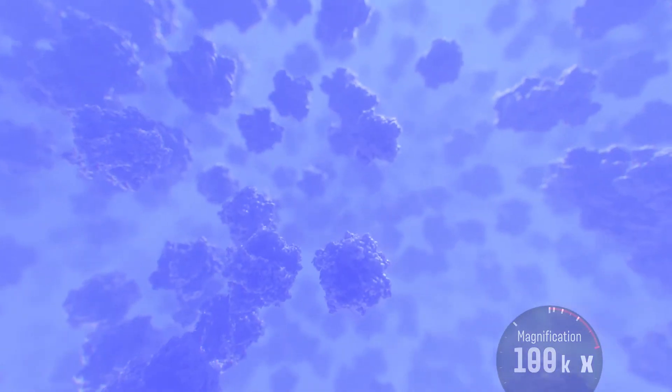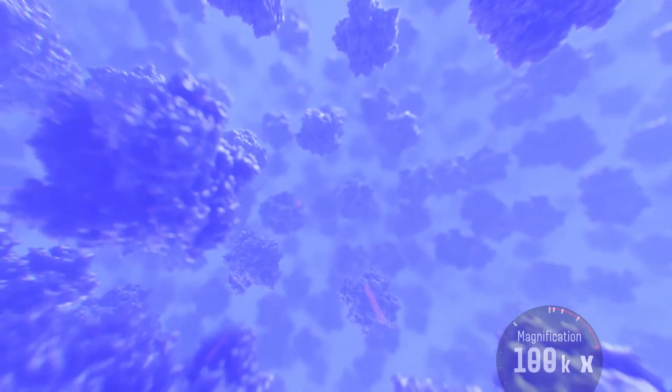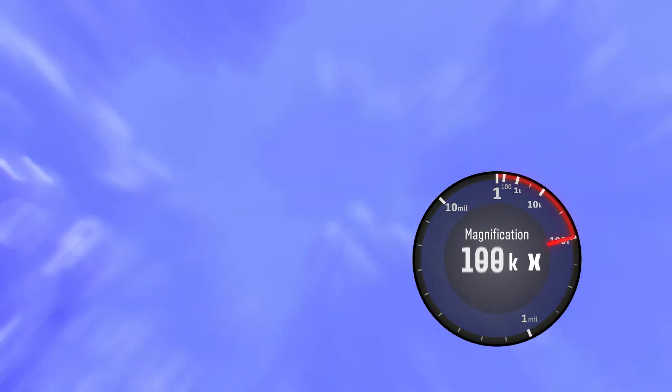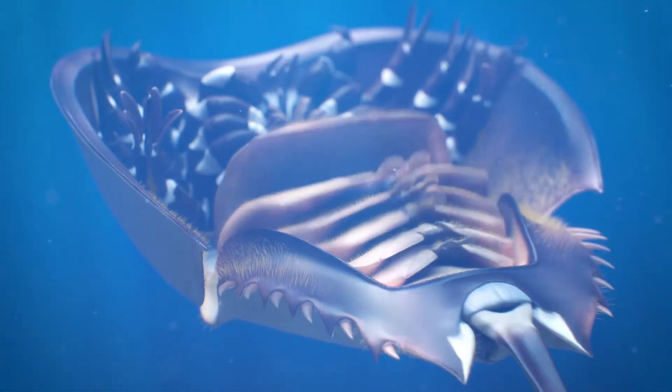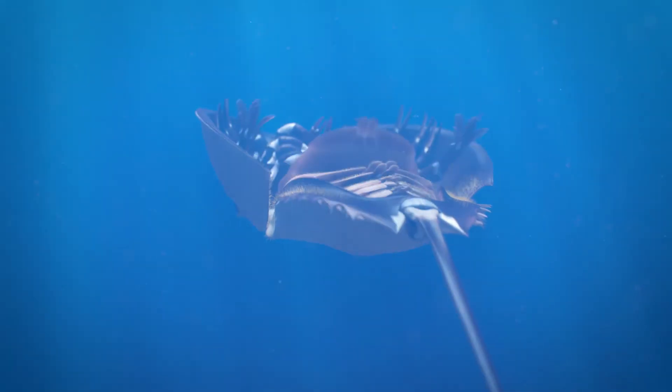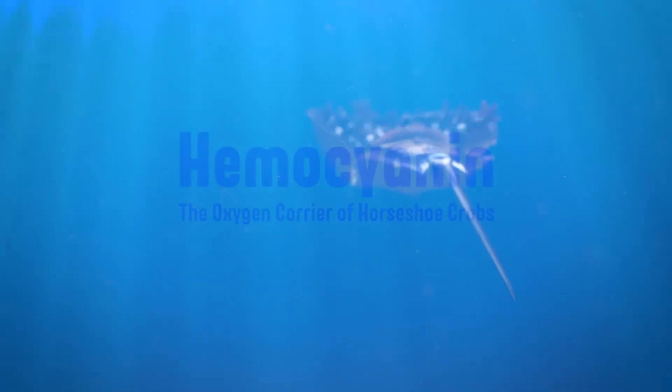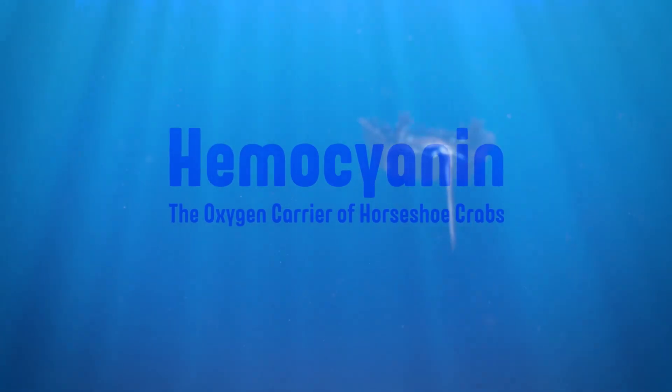Finally, the haemolymph turns blue as haemocyanin is saturated with oxygen. This concludes our quick peek into the oxygen carrier of the horseshoe crab, haemocyanin. Thanks for watching.